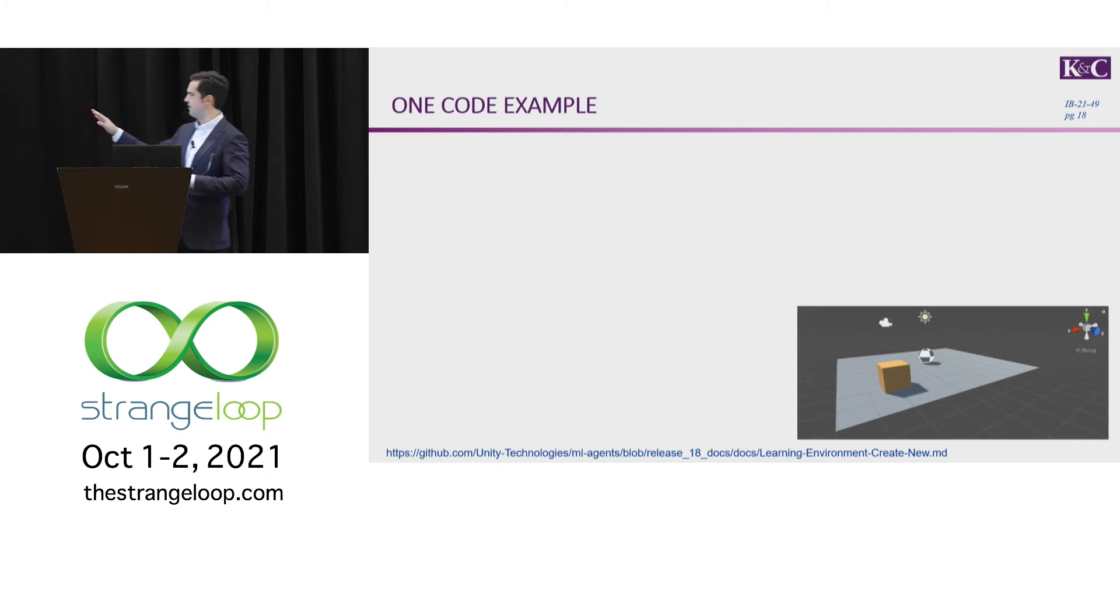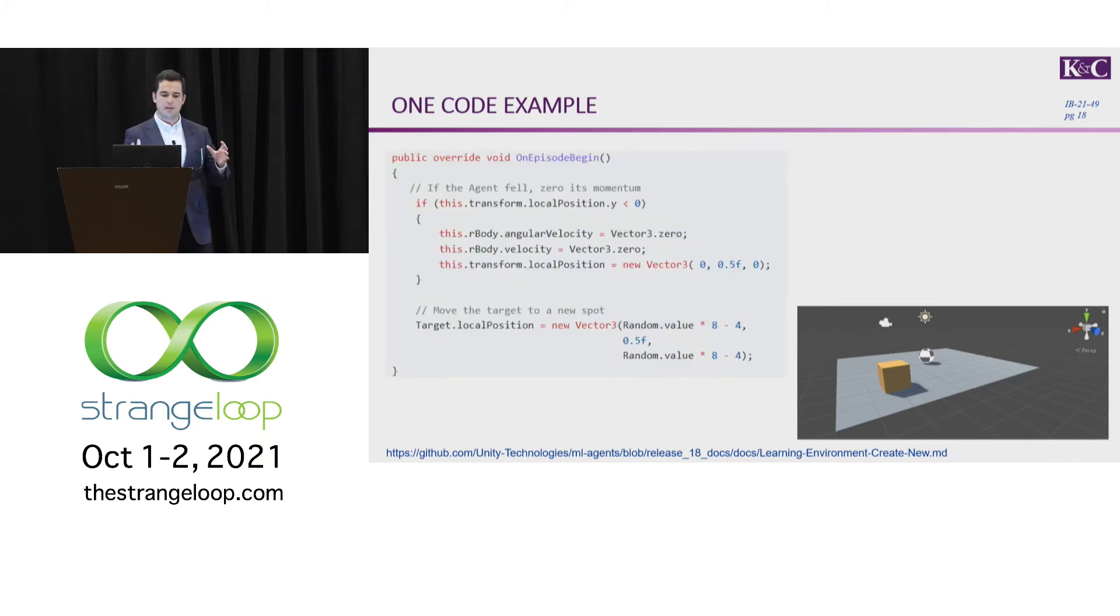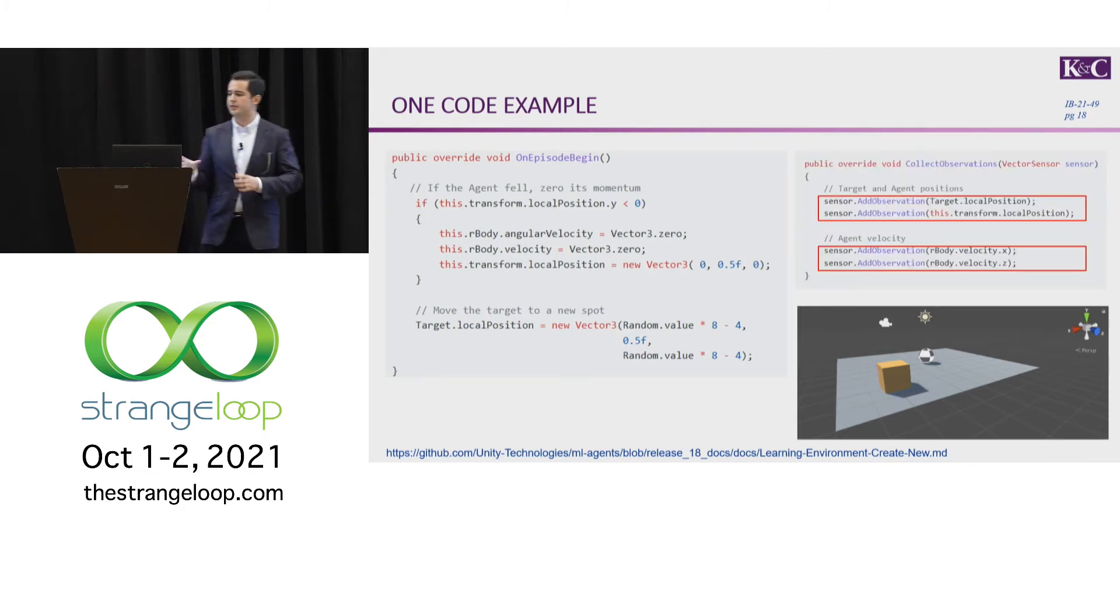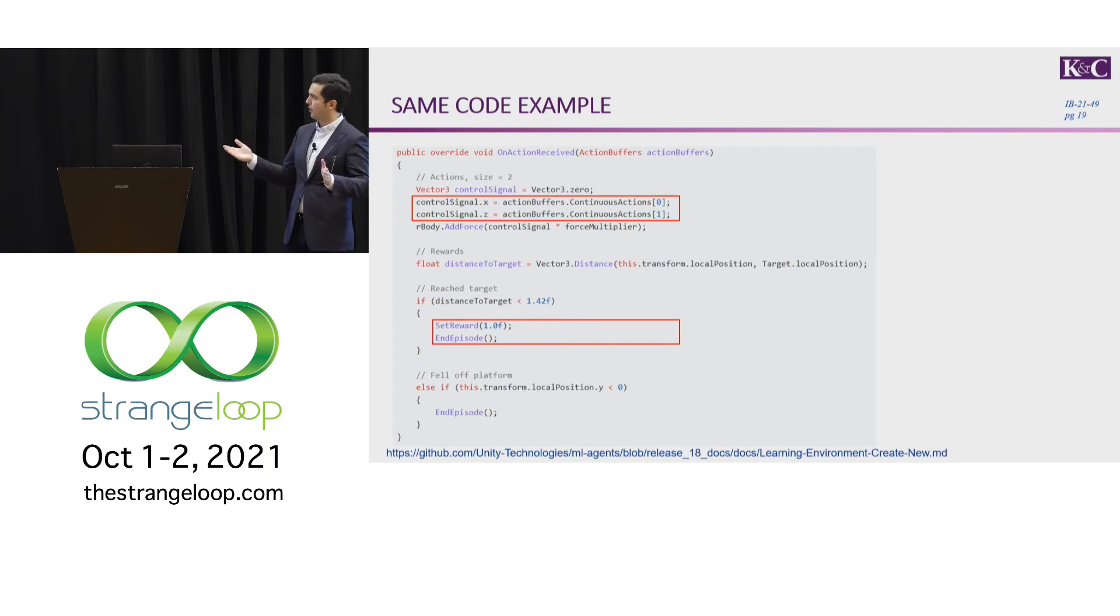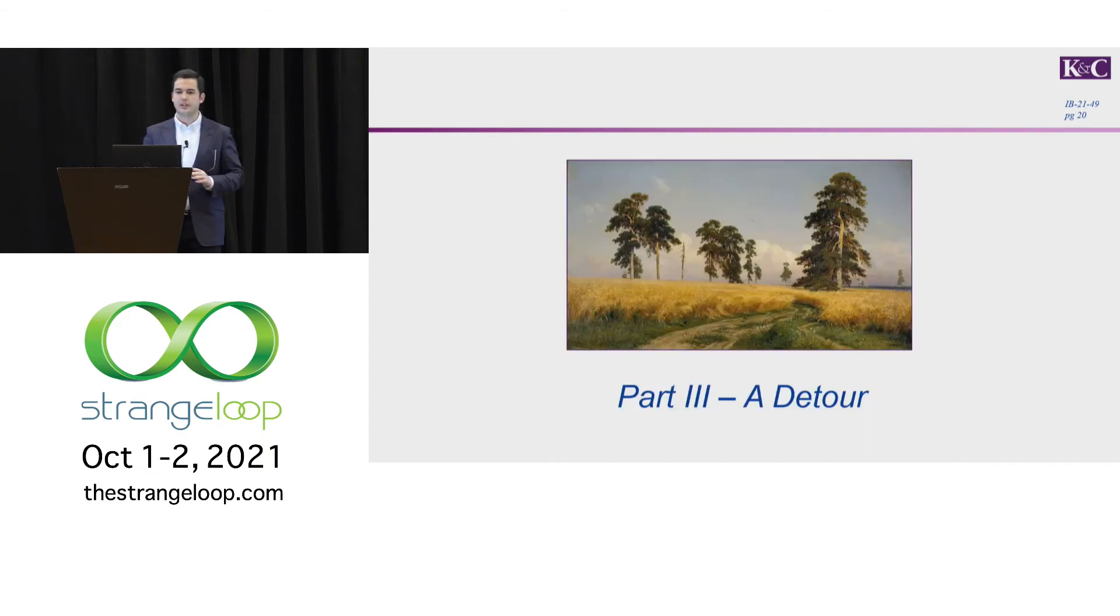Here's a very simple code example, somewhat analogous to what we're doing. We have a ball and we want it to hit a box. On episode begin is initializing where that ball placement is and where the box is. Collect observations is really saying you have a vector of numbers and you can add numbers to that vector, mapping the state. On action received allows you to read from another buffer called action buffers, and you describe what each of those values means. In this problem, it's the forces in the X and Z, the horizontal plane. If you have your end state, you can set a reward.